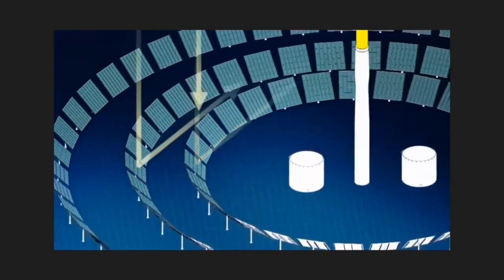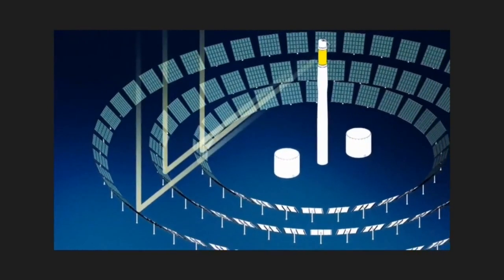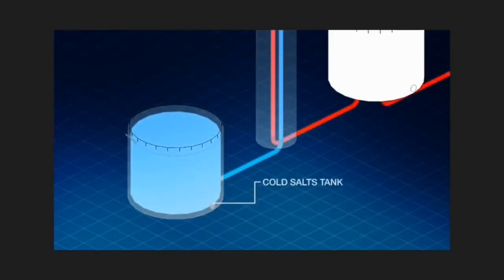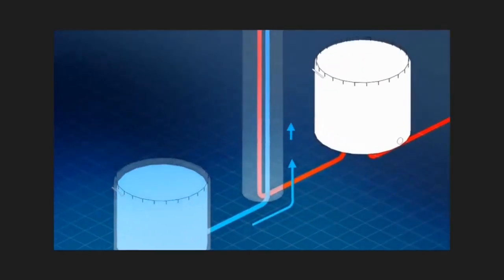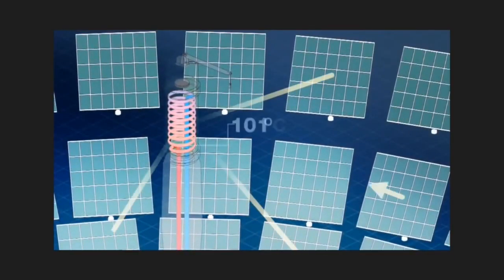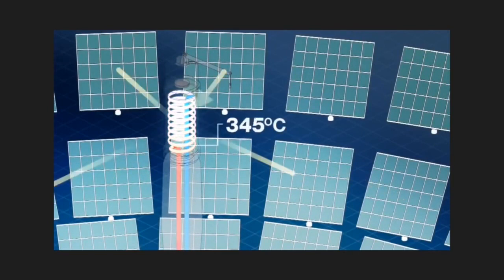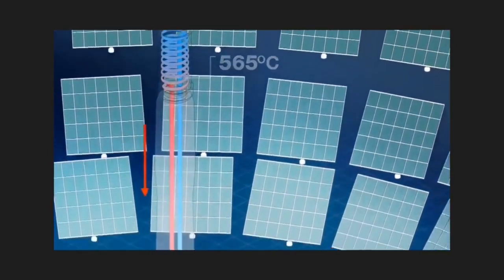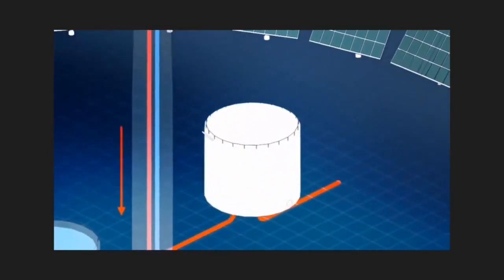Sunlight is reflected from each heliostat onto a central receiver at the top of the tower. Sodium and potassium nitrate salts are pumped from the cold salts tank up to the receiver where they absorb the concentrated solar thermal energy, reaching temperatures of up to 565 degrees. The heated salts are then pumped down to the hot salts tank where they can be stored in a molten state or used to generate electricity via the heat engine.